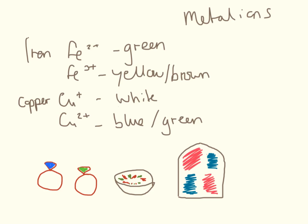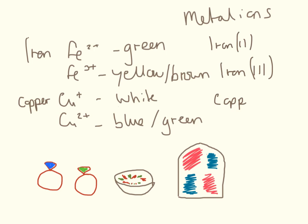Transition metals can be found in a number of different ions. Iron, for example, comes in iron 2 and iron 3, and you might sometimes see this written as Fe²⁺ and Fe³⁺. You will come across this a lot more at A-level, but if you ever see this notation at GCSE, that is what it is. Copper comes in two different states: copper 1 and copper 2, written similarly.